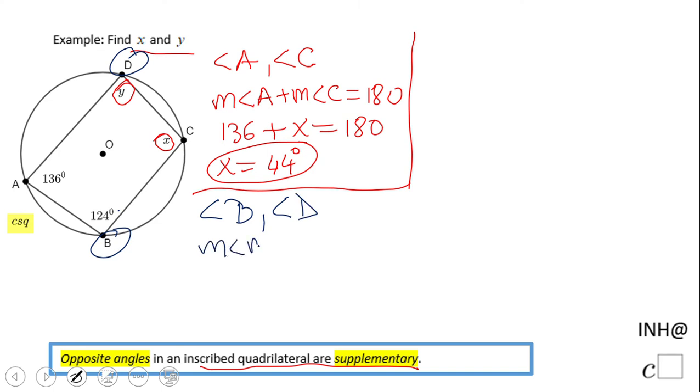We're just going to substitute. We have 124 plus Y equals 180. We need to subtract 124 from 180, and we end up with 56 degrees. That is how much Y is.